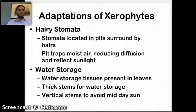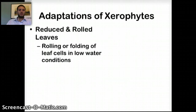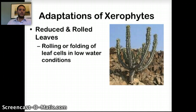The second adaptation is water storage — water storage tissues are present in the leaf structure. These species have thick stems for water storage and vertical stems to avoid midday sun, reducing the surface area exposed to it. The third adaptation is reduced and rolled leaves. The rolling or folding of leaf cells due to low water causes them to become flaccid and reduces the area where transpiration can occur. Species may have small leaves, thick leaves, spines, or sometimes no leaves at all — as in a cactus — to reduce overall water loss.